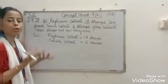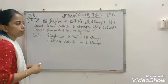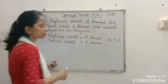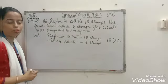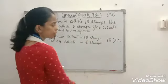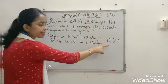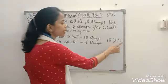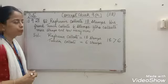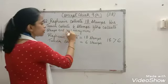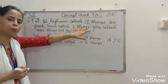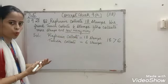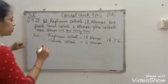First we will write: Ragumir collects 18 stamps, and his friend Tanvir collects 6 stamps. This is the information given. Now, what we need to find out — who collects more stamps? To find out who collects more stamps, we have to compare both the numbers, 18 and 6. When we compare these two numbers, we find that 18 is greater than 6. 18 is a two-digit number and 6 is a single-digit number, so 18 is greater than 6. That means Ragumir collects more stamps. Now, the second part — how many more? We have to subtract these two numbers. We will show it by subtracting by drawing dots.